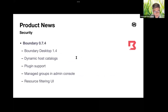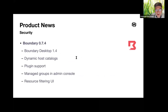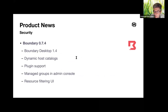Moving on to Boundary — an identity-based access tool for zero-trust security, enabling access to any system from anywhere based only on user identity. Boundary 0.7 dynamically connects to any service registry from AWS and Azure, enabling all hosts and host catalogs from those cloud environments to always be up to date inside Boundary.